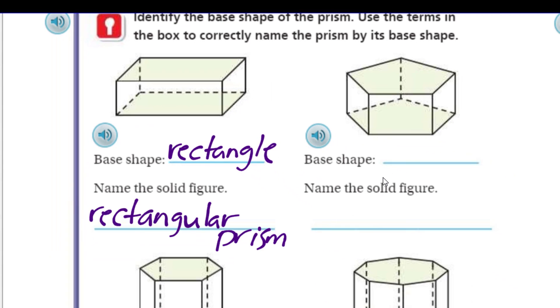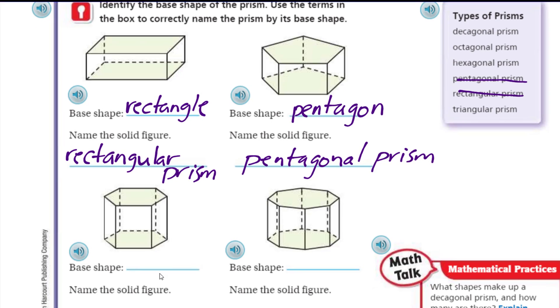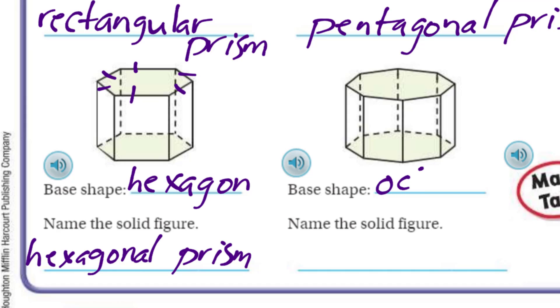So this base shape we said was the rectangle, so the name of the solid figure is rectangular prism. Over here we had the pentagon, so that was the pentagonal prism—change the word pentagon into an adjective. Then this one here was the hexagon—one, two, three, four, five, six sides. Here's that hard word again: hexagonal. Hexagonal prism. The base shape here was the octagon, and then we have octagonal prism.